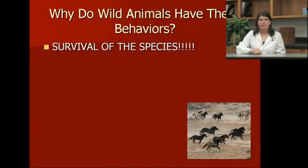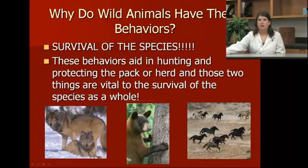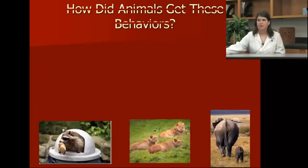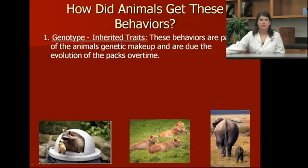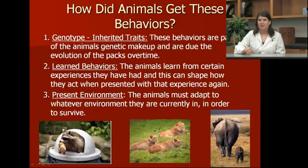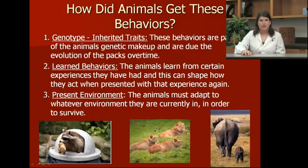Why do wild animals have these behaviors? Mostly for survival of the species — without these behaviors they wouldn't be able to hunt or protect each other well enough for the species to survive. How did animals get these behaviors? There are three ways: first, genotype, where behaviors are part of the animal's genetic makeup due to the evolution of packs over time; second, learned behaviors, where the animal learns from a certain experience that shapes how they act in the future; and third, present environment, where animals must adapt to whatever environment they're in at that time.